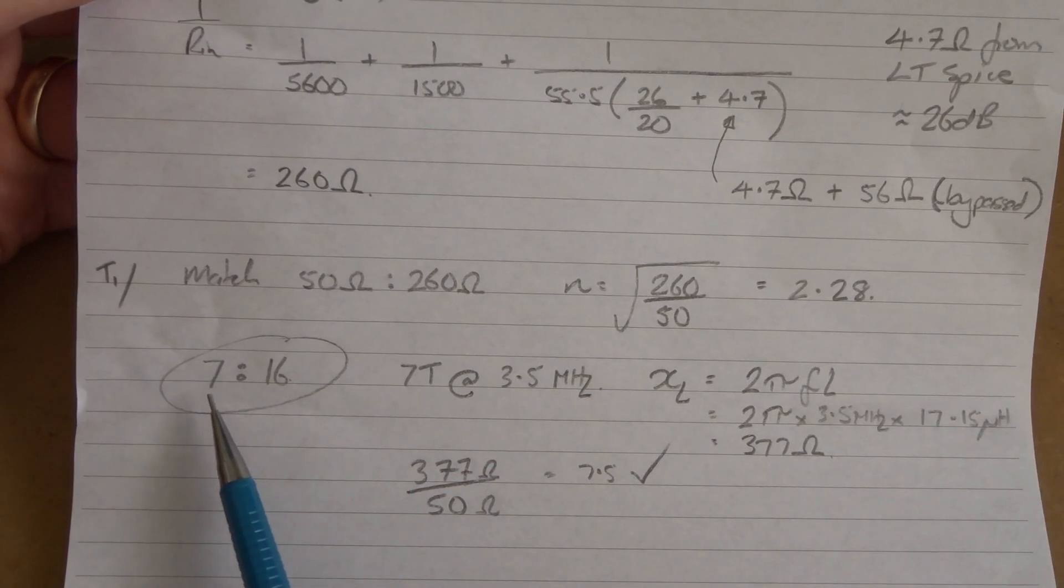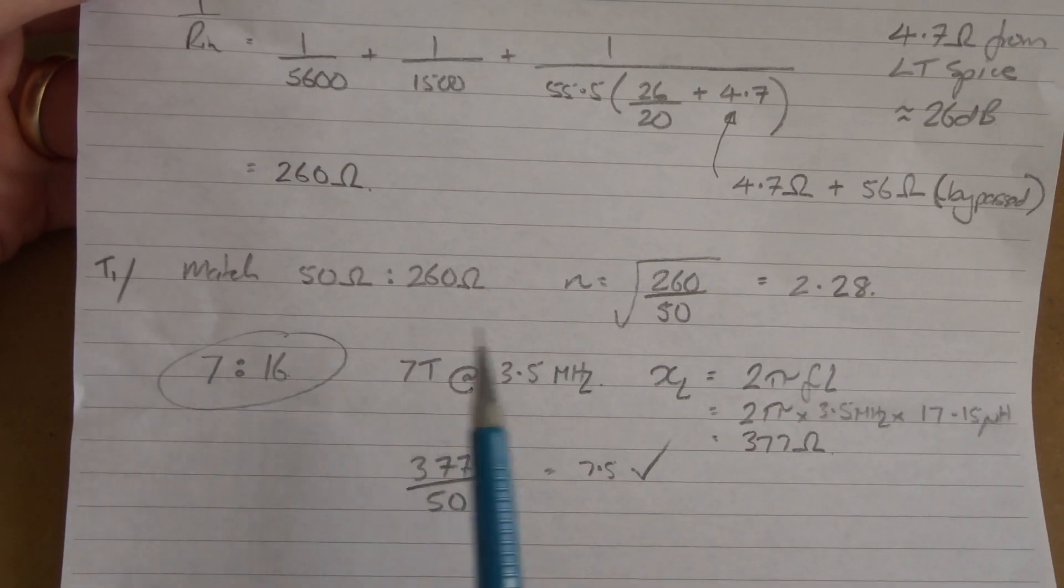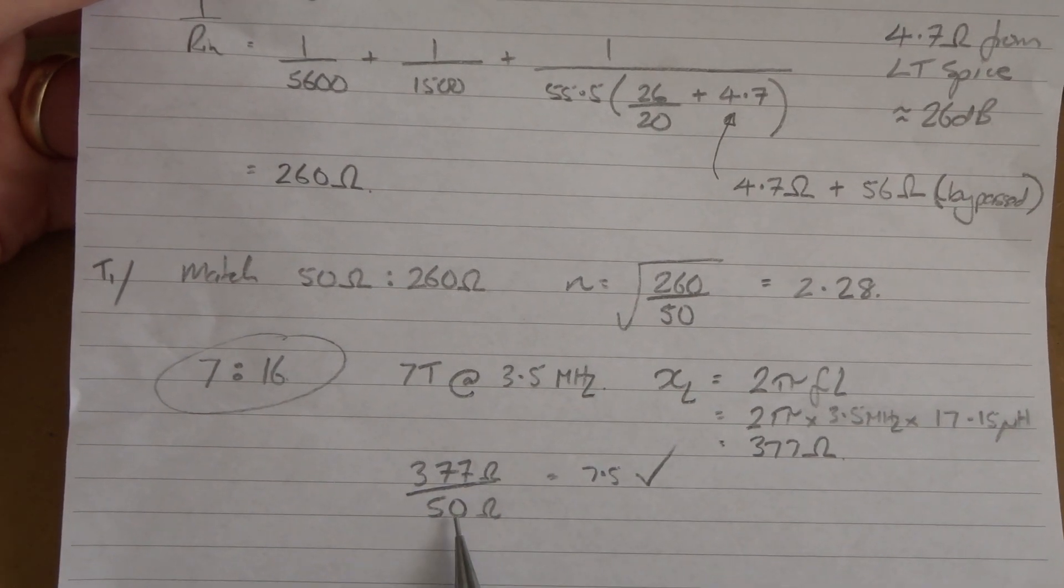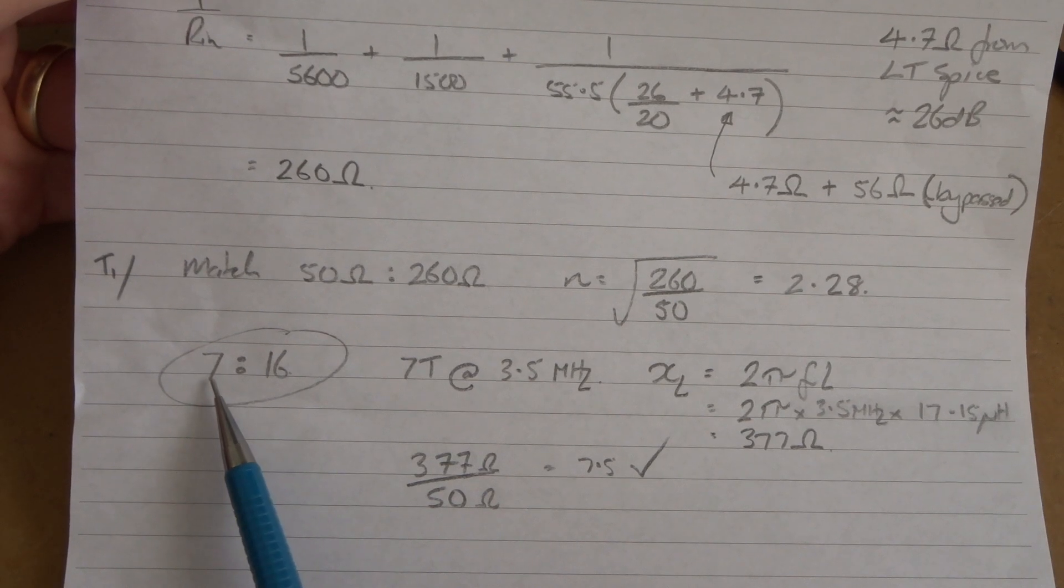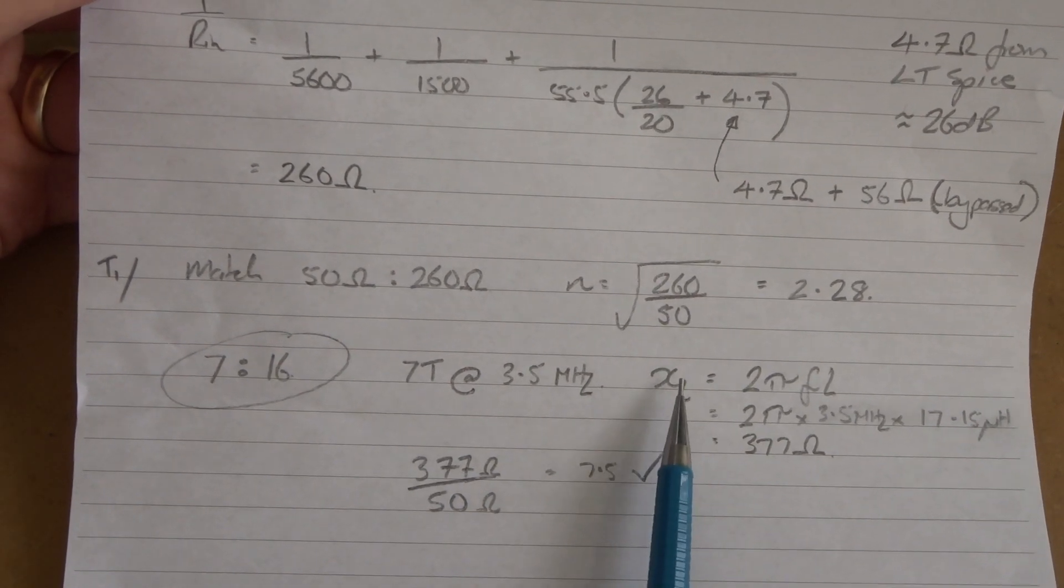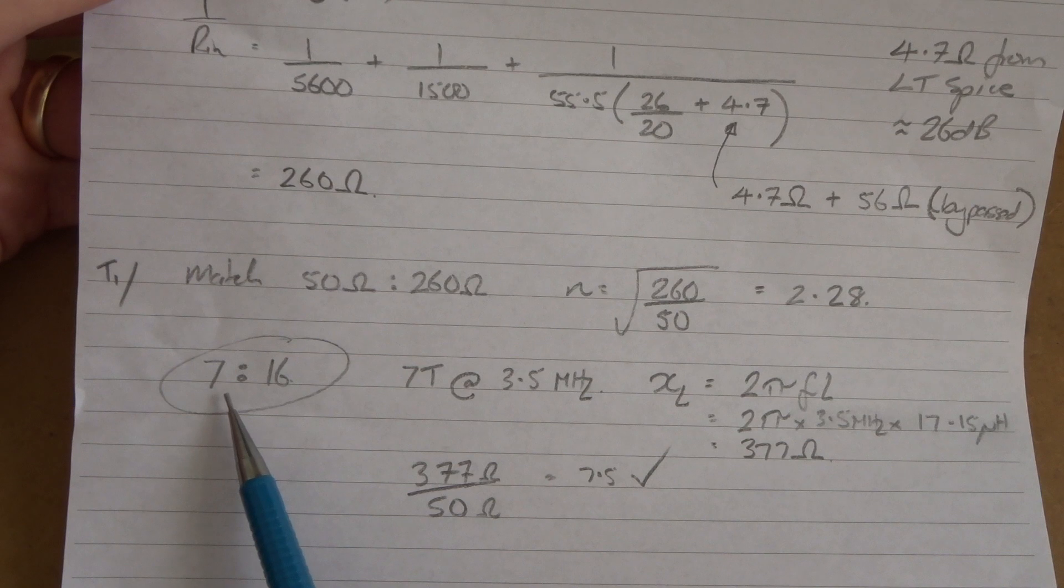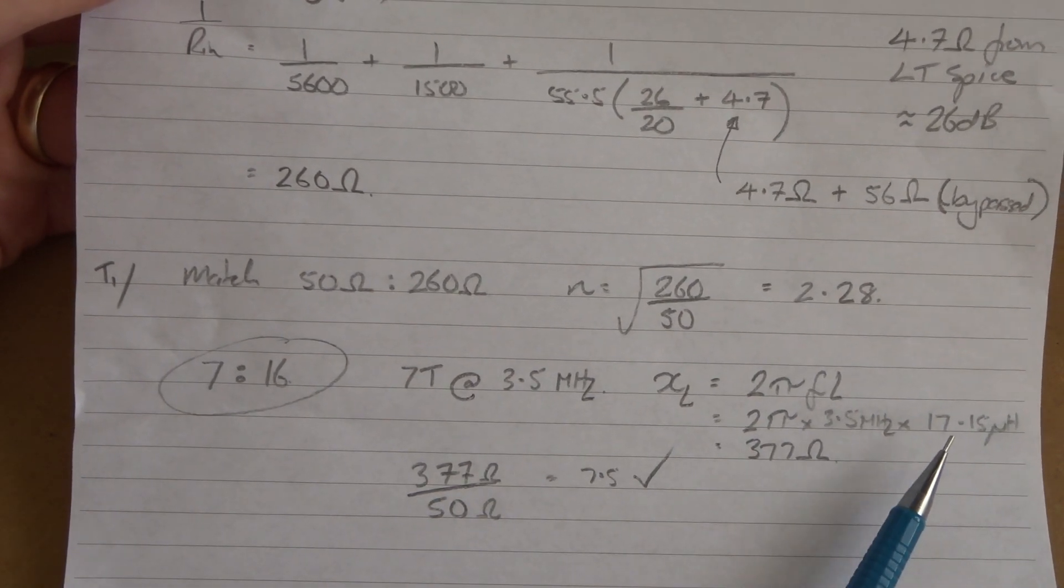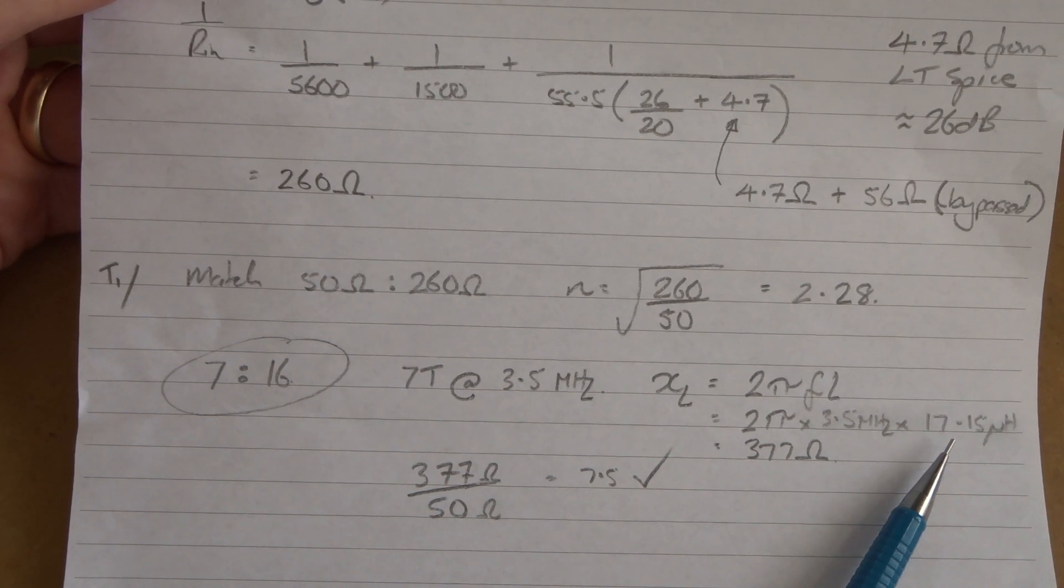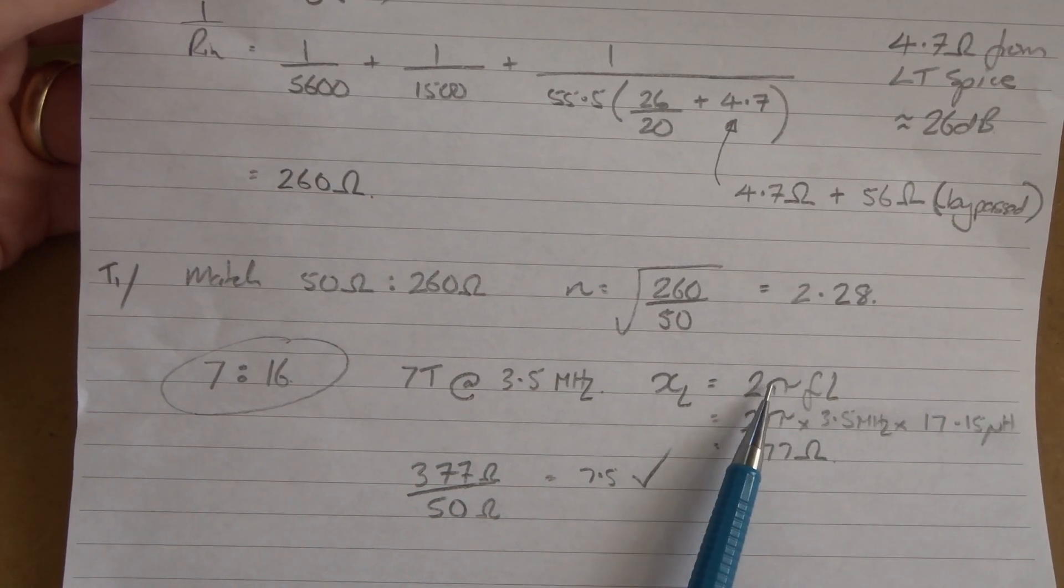...the inductive reactance is at least 4 to 5 times the resistance or impedance hanging off it. We said it's 50 ohms, so I need at least 4 to 5 times 50 ohms for its inductive reactance. I determined that integer value was 7 to 16, so I need to check that 7 turn one. Using an online calculator, 7 turns on an FT37-43, the core I'm using, comes out at 17.15 microhenries.